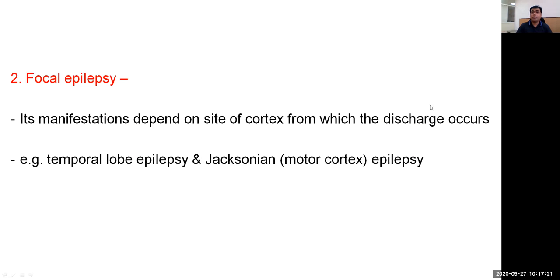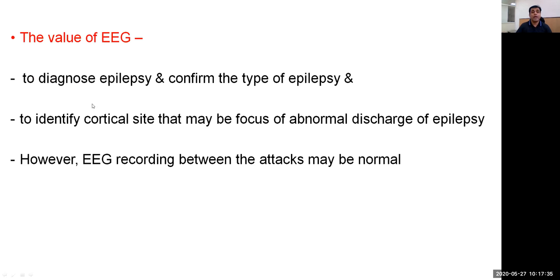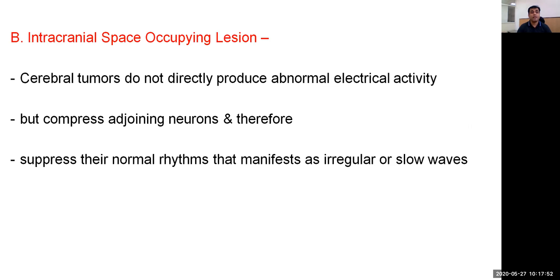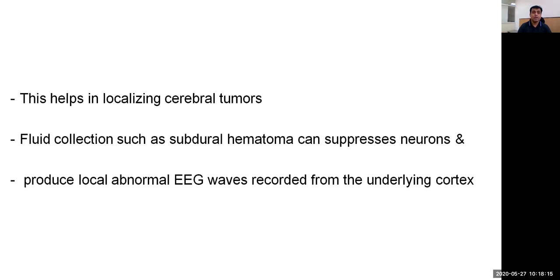Focal epilepsy is a manifestation depending on the site of cortex from which discharges originate — for example, temporal lobe epilepsy or Jacksonian motor cortex epilepsy. The value of EEG is to diagnose epilepsy, confirm its type, and identify the particular site that may be the focus of abnormal discharge. However, EEG recording between attacks may be normal. For intracranial space-occupying lesions, cerebral tumors do not directly produce abnormal electrical activity but compress adjoining neurons and suppress their normal rhythm, producing irregular or slow waves, helping to localize the tumor. Fluid collections such as subdural hematoma can also suppress neurons and produce local abnormal EEG waves from the underlying cortex.